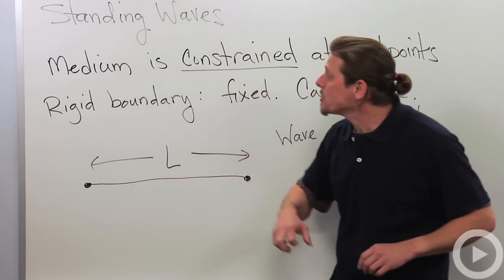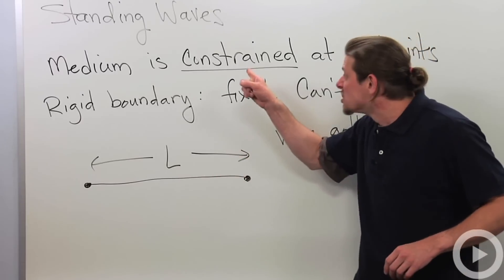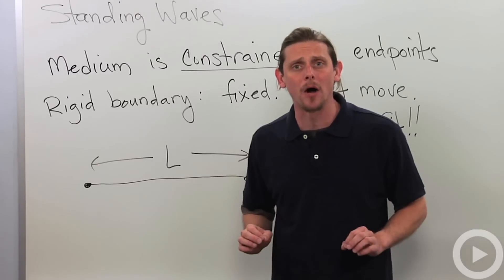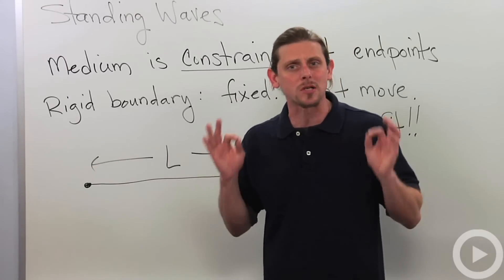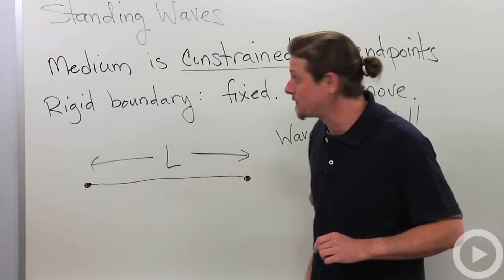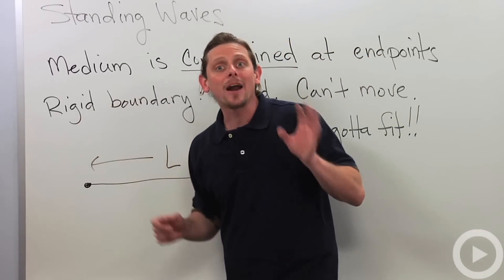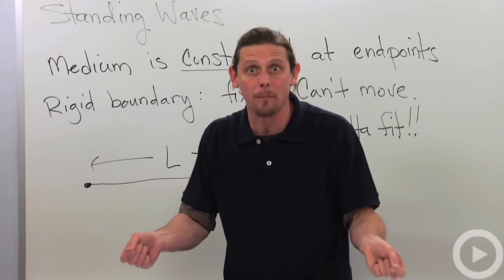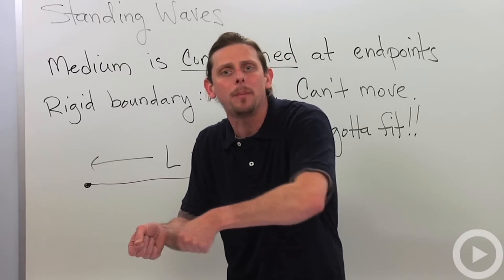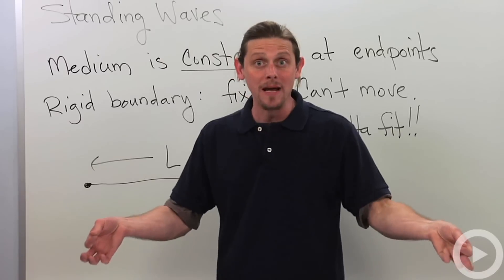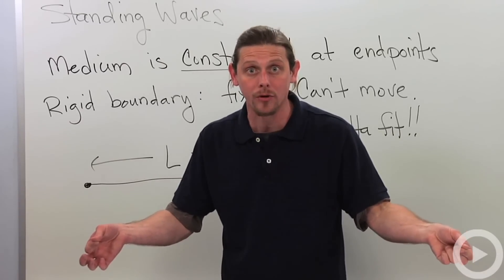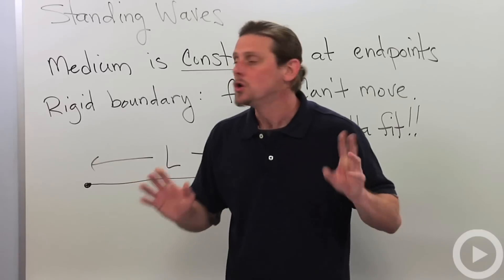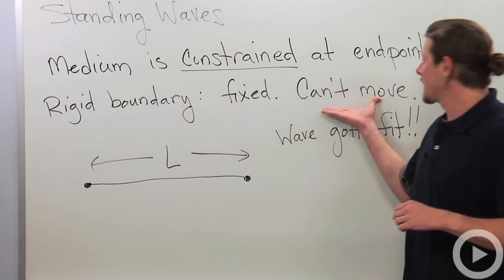Standing waves occur whenever you have a medium that is constrained at the end points. Now, we're going to talk about one type of boundary condition. There's a couple other ones, but this is the most commonly seen in introductory physics, the rigid boundary. At a rigid boundary, we pin the boundary down, the medium down at the boundary, so that it can't be disturbed. So the medium can be disturbed in between the two boundaries, but the boundaries themselves got to remain where they are. So this is a rigid boundary, can't move.